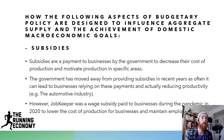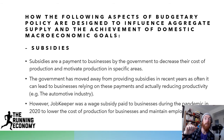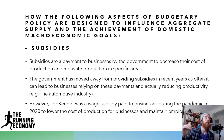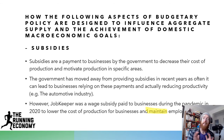Subsidies are a payment by the government to businesses to decrease their cost of production and motivate production in specific areas, such as solar panels. The government has moved away from subsidies in recent years because it often leads to businesses relying on these payments and actually reducing productivity — as seen with the automotive industry, where Toyota, Ford, and Holden were not competitive with overseas nations due to Australia's high minimum wage, and when the government stopped subsidising them, they closed down. However, JobKeeper was a wage subsidy paid to businesses during the pandemic in 2020, paying wages to lower the cost of production and maintain employment during that time — importantly, it was about maintaining employment, not increasing it. The key distinction is they were trying to stop people from becoming unemployed, not get more people employed.